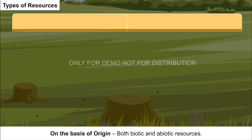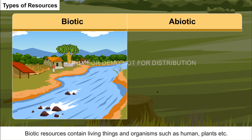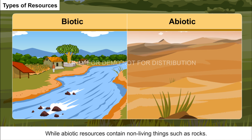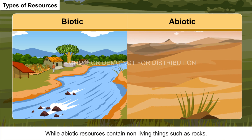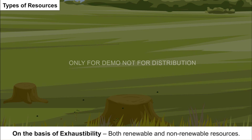On the basis of origin, both biotic and abiotic resources come under this category. Biotic resources contain living things and organisms such as humans and plants, while abiotic resources contain non-living things such as rocks.